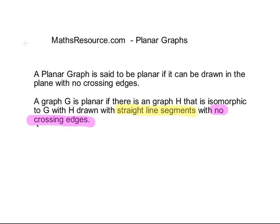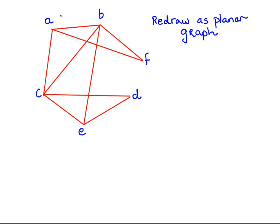That is of particular importance. This definition comes from a textbook by a guy called Wagner from Germany, and he mentioned the straight line segments. But the important part is no crossing edges. So what we have here is an example. What we are going to do is redraw this as a planar graph. I am going to slightly dispense with the matter of straight line edges and just draw it out freehand.